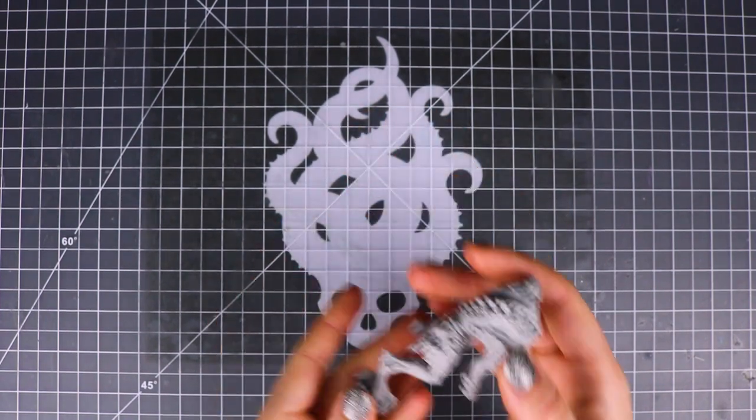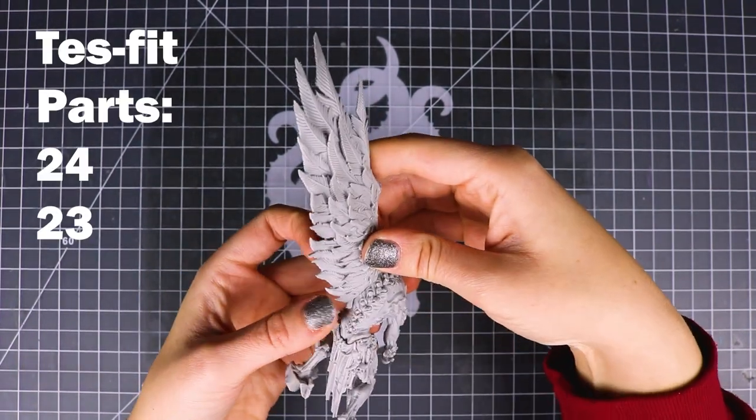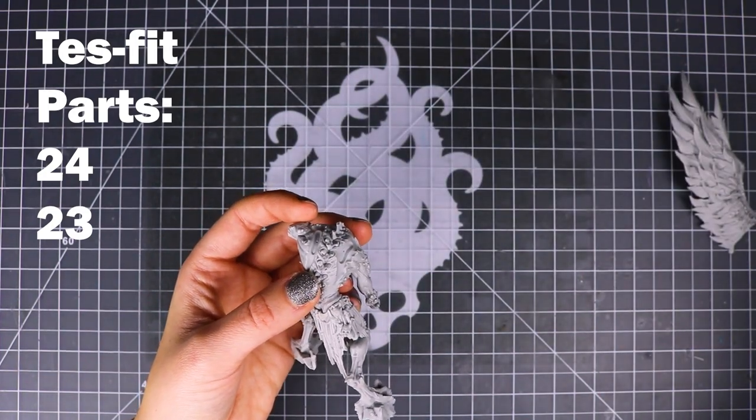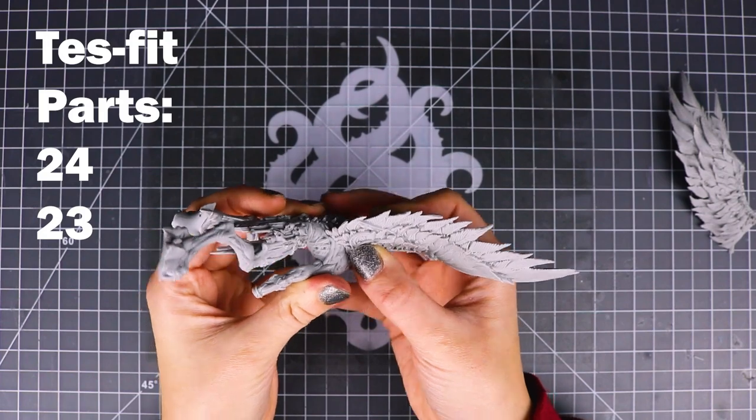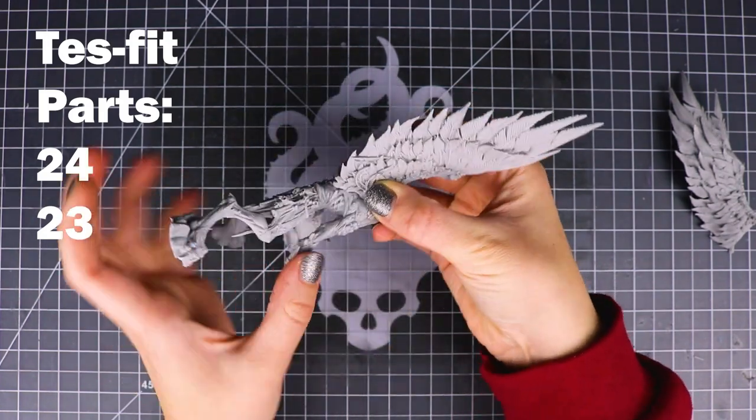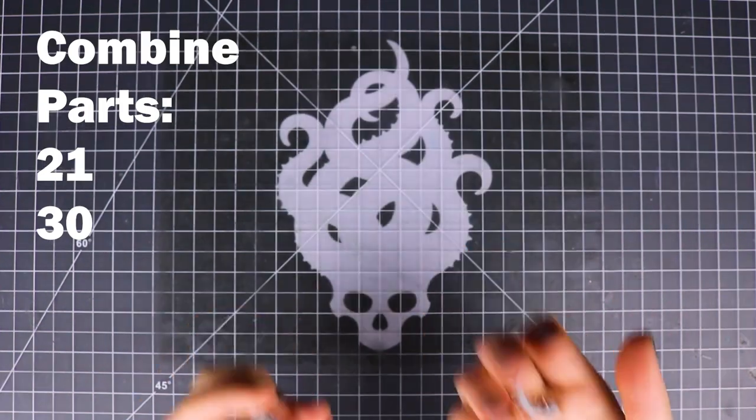So we're going to let this dry and test fit the wings while we're waiting. With the wings you might also need to use some heat just at the bottom there if you want it to fit flush. I didn't need heat for this set of wings but for the first assembly I did it was not as flush as I wanted it to be. So just that tip at the bottom can sometimes bend but it's an easy fix.